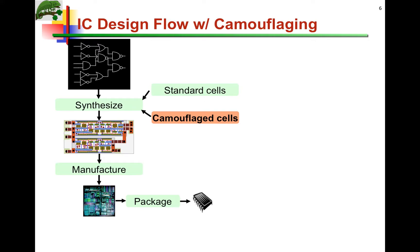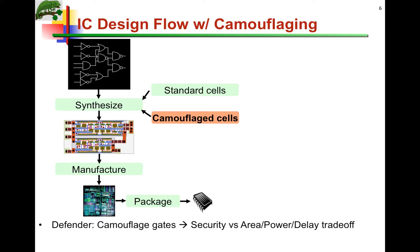Once we get the chip, from the designer's — the defender's — point of view, decisions must be made regarding how many camouflage cells we can afford to use, in what structures, and in what parts of the design. These decisions dictate the security obtained from using camouflage cells, and of course they have implications for the area, power, and delay overhead that these camouflage cells incur.